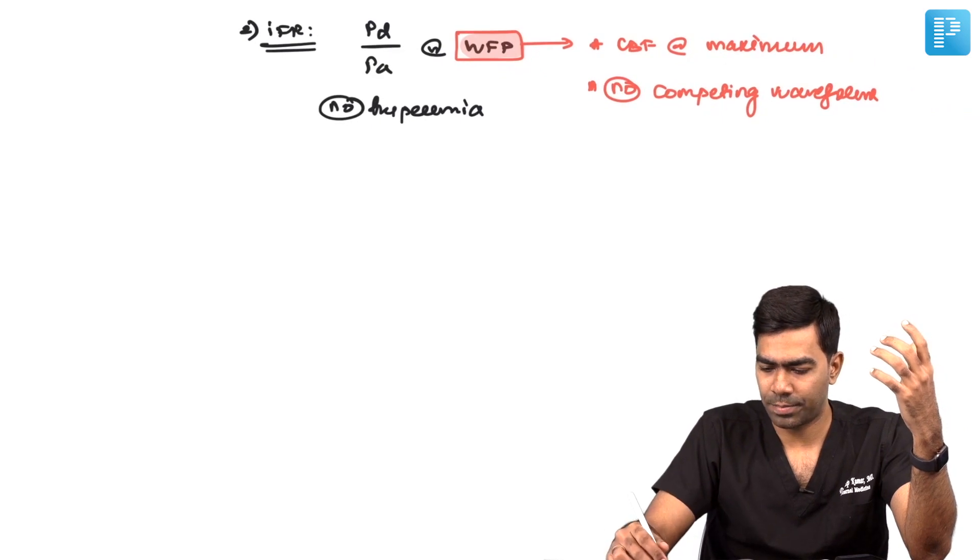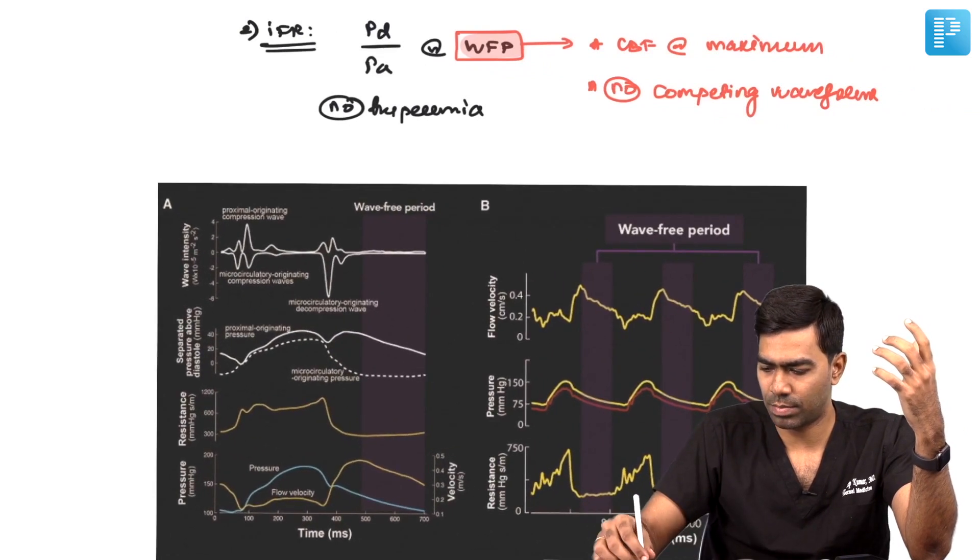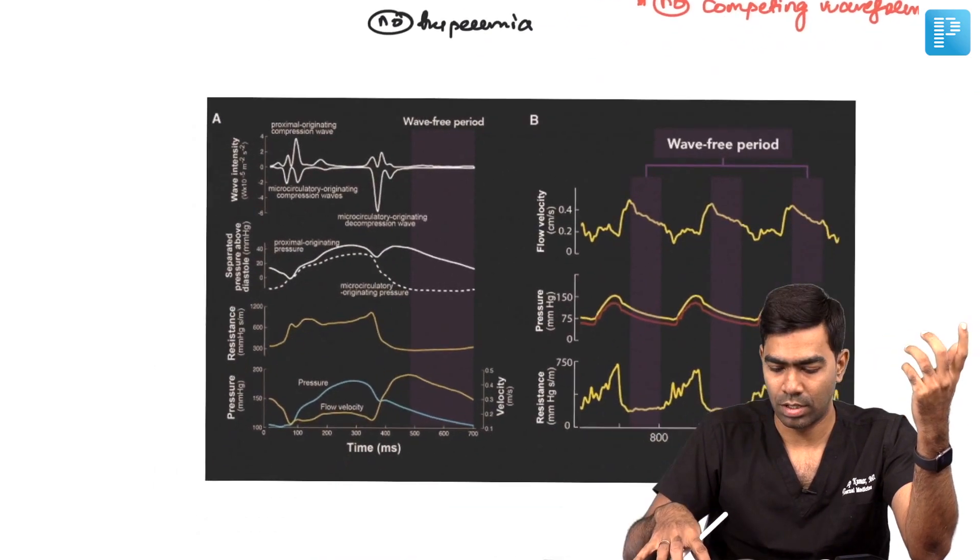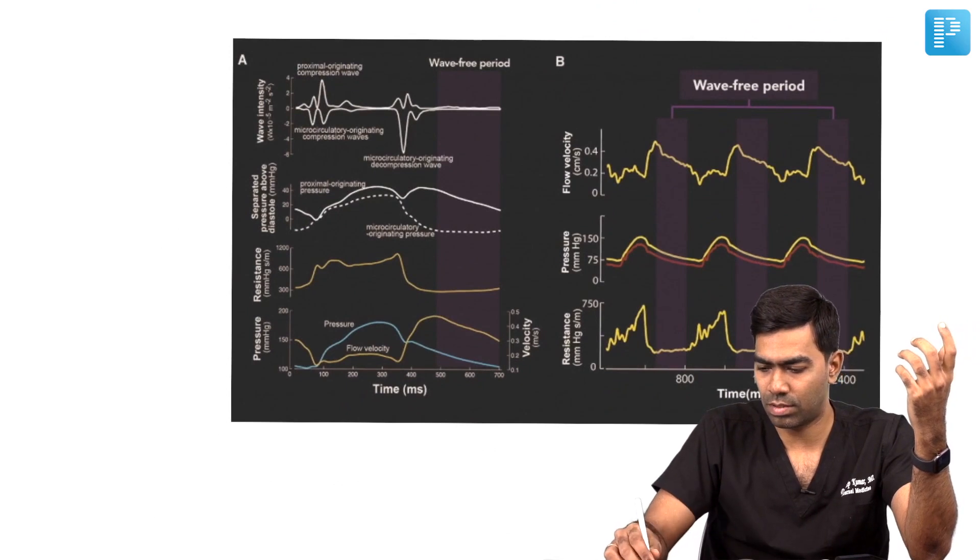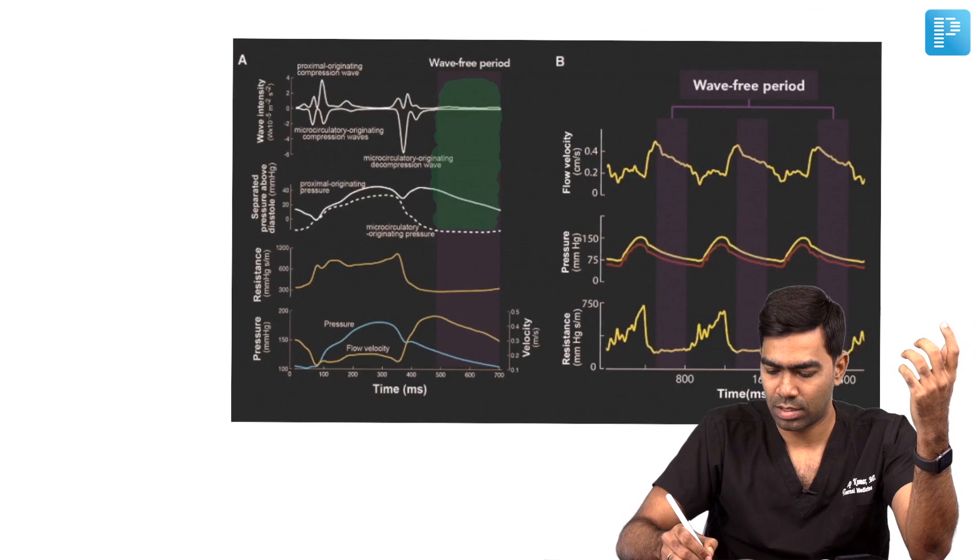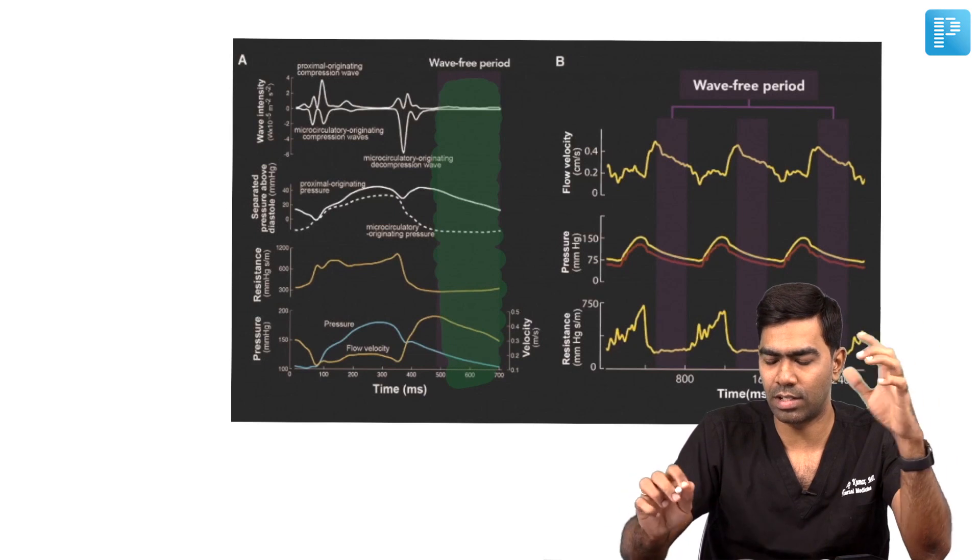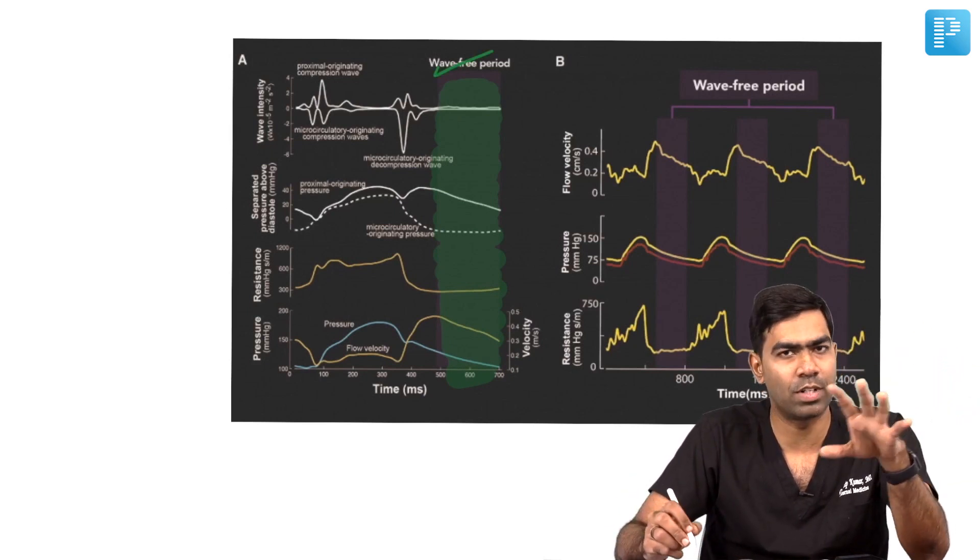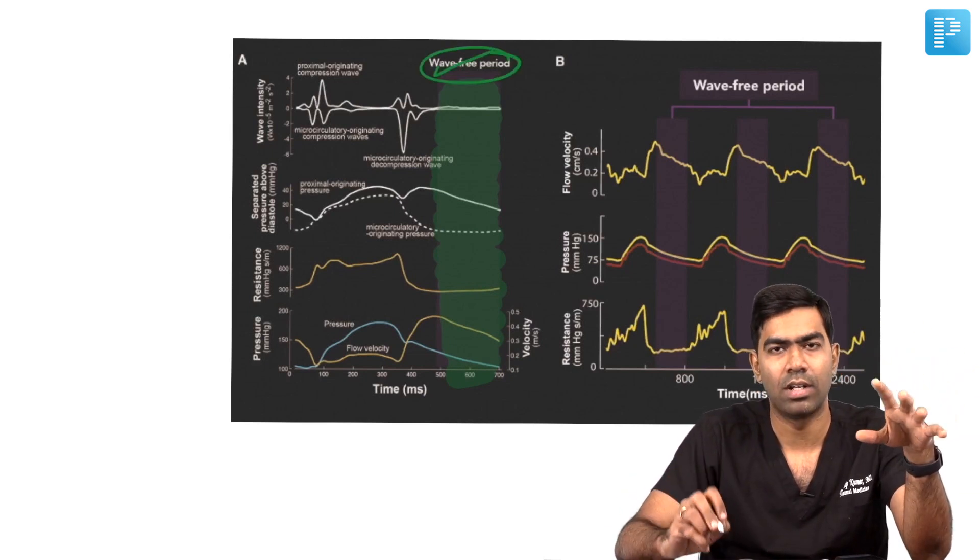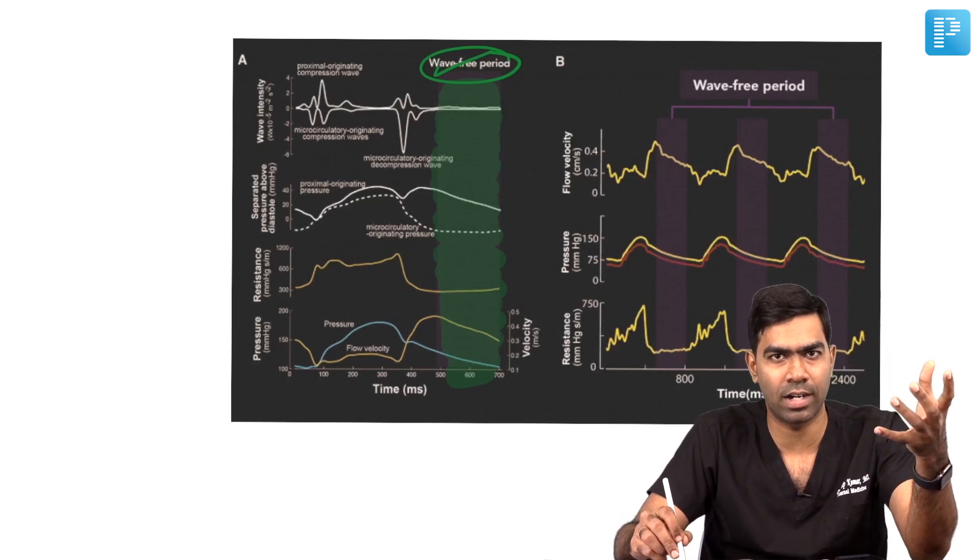To understand where the wave free period is, even though it's not important for exams because machines do that, you can see this image clearly shows an area where coronary blood flow is at its maximum and there are absolutely no competing waves from other systemic vessels.